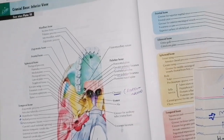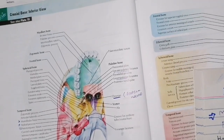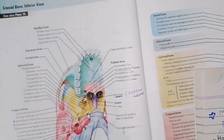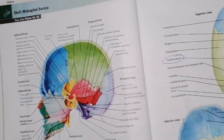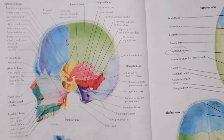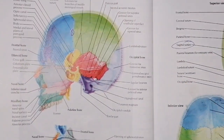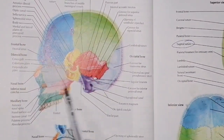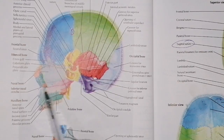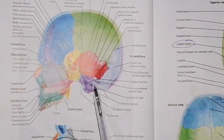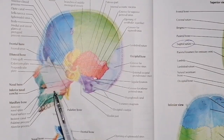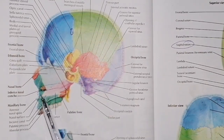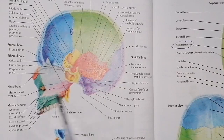Hello students, today we will discuss the inferior view of the skull bone from the anterior and posterior view. If you look at the lateral view of the skull bone, this portion is called the base of skull or inferior view. So the inferior view that we have to discuss is what is the base of the skull.